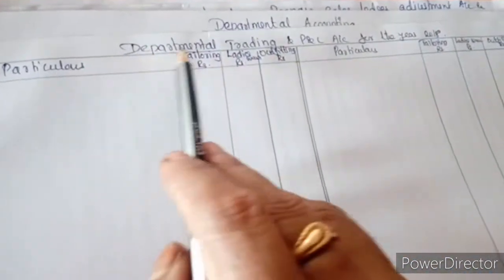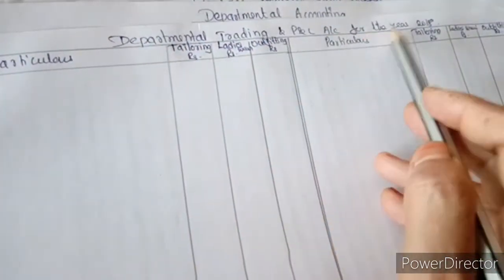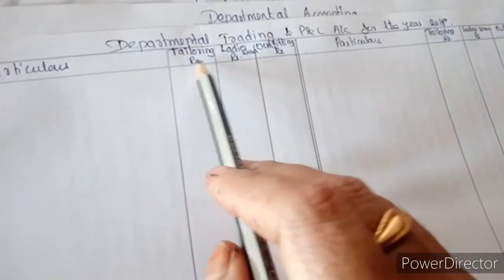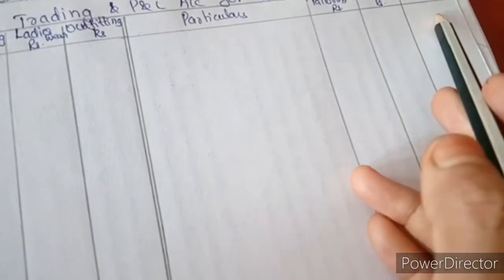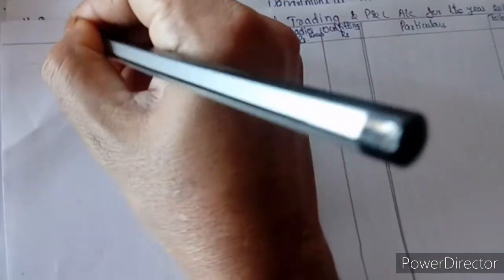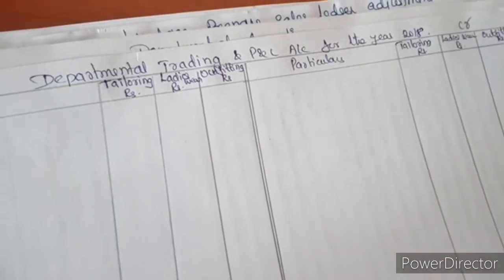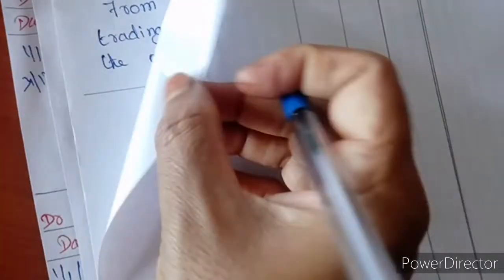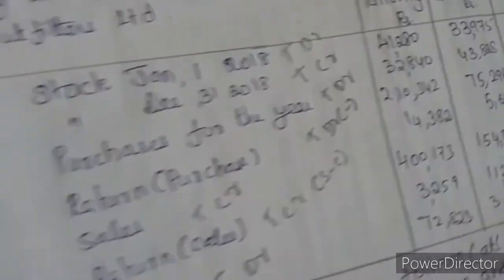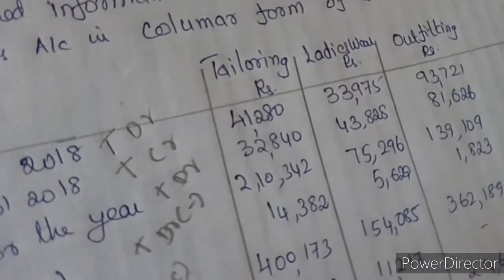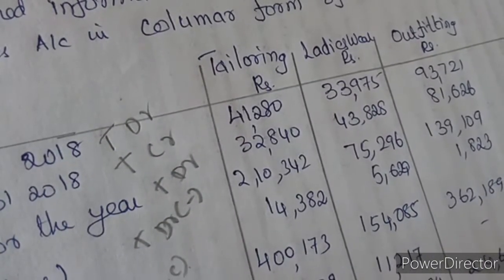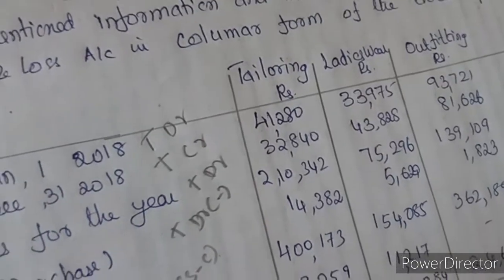Now the account is ready. Departmental Trading Profit and Loss Account for the year. Columns: Particulars, Tailoring, Ladies Wear, Outfit — on both debit and credit sides. First entry: Opening Stock. Opening stock is recorded on the debit side of the trading account.